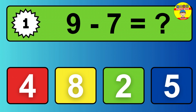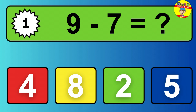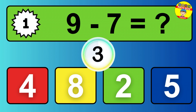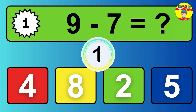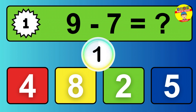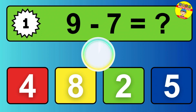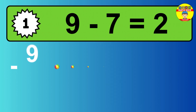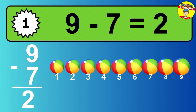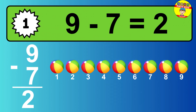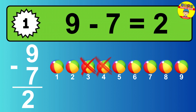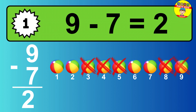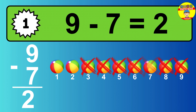Question one. Nine minus seven equals what? So the answer is, nine minus seven is two. Let's count it. One, two.